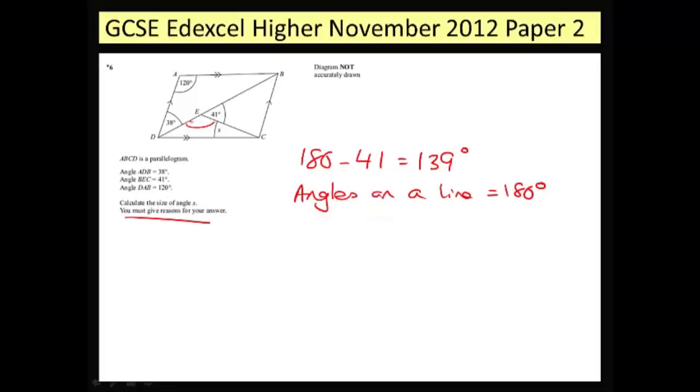Once I know that this is 139, you can see where I'm going to go next. I'm going to try and work out what this missing angle is. Once I've got those two, X is easy to find.